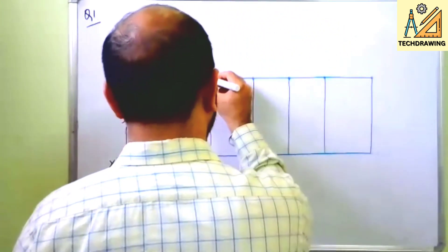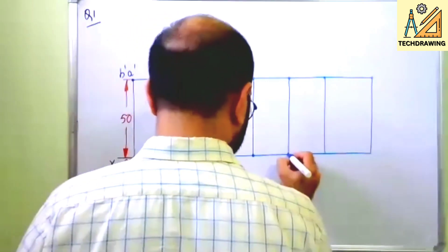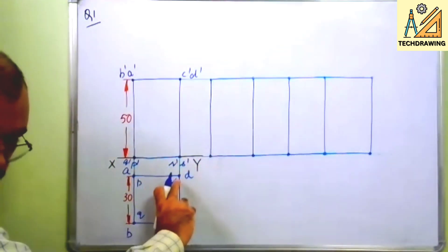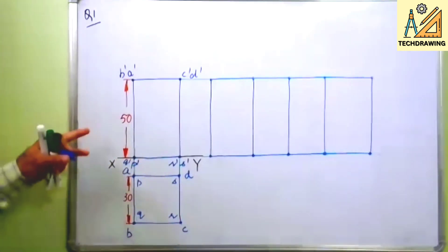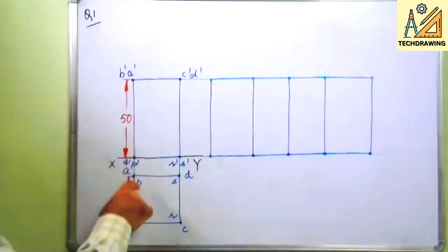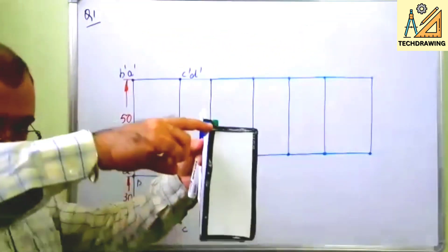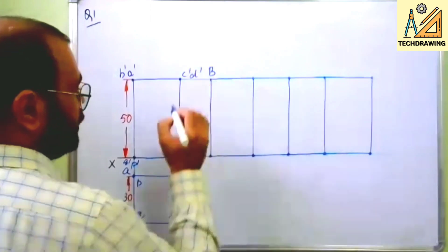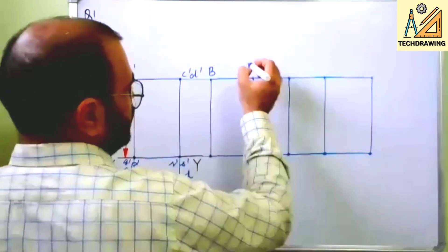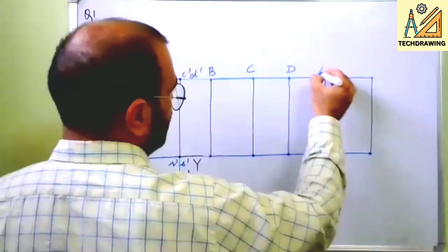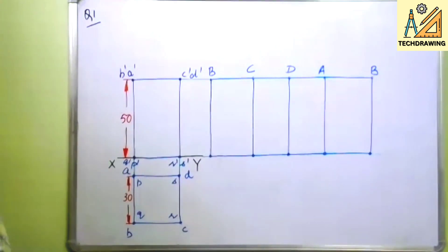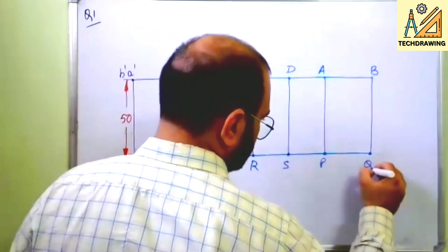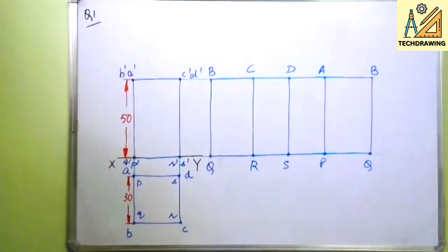So this will be the development of square prism. Right, this one side is equal to this. Okay, now you just understand how you will be naming it. Now I am cutting this from BQ. This is B, this is Q, so I'll first point I will name it as capital B. C, C, D, A and B again. Similarly Q, R, S, P and Q. This will be the development of square prism.